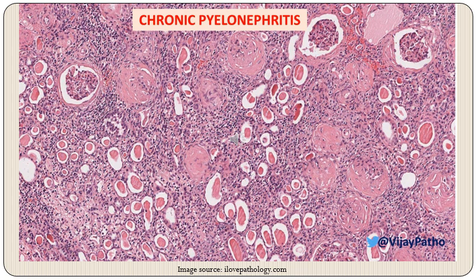This high-power picture of chronic pyelonephritis shows all the features: cystic spaces with eosinophilic colloid casts representing thyroidization of tubules, preserved glomeruli at the upper right corner and left, multiple hyalinized sclerotic masses which are sclerosed glomeruli, and mononuclear inflammatory infiltrate with some degree of fibrosis in between the sclerosed masses.